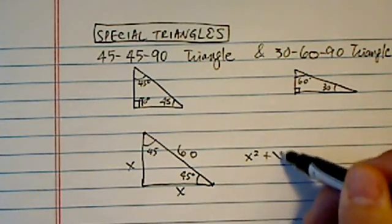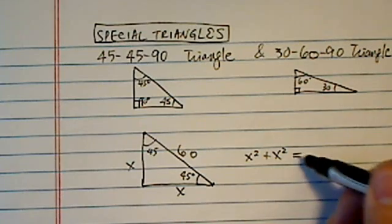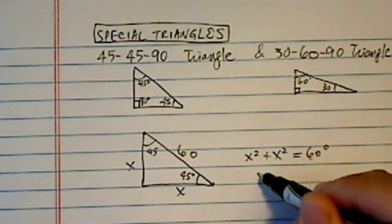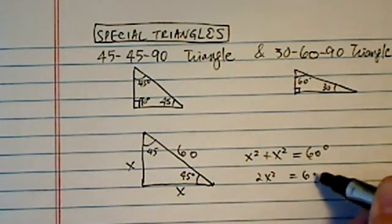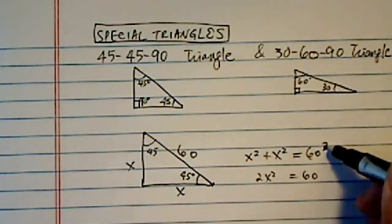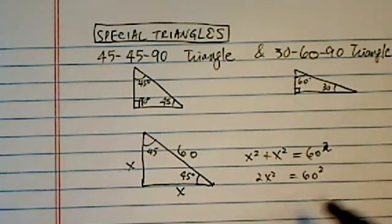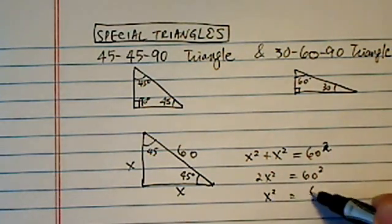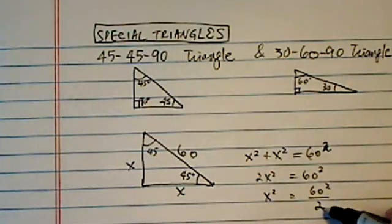Using Pythagorean Theorem, of course, we have X squared plus X squared equals sixty squared, where two X squared is equal to sixty squared. And then X squared is equal to sixty squared divided by two.